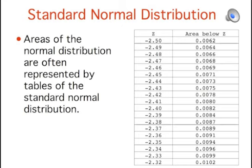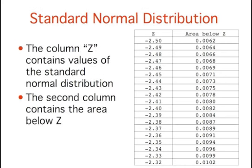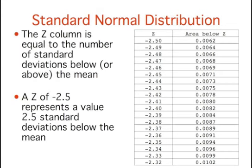A portion of the table of the standard normal distribution is shown here. The first column, titled z, contains values of the standard normal distribution. The second column contains the area below z. Since the distribution has a mean of 0 and a standard deviation of 1, the z column is equal to the number of standard deviations below or above the mean.